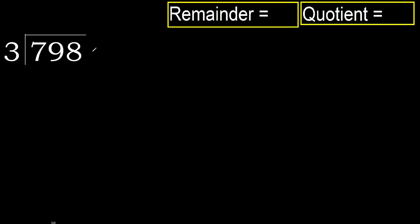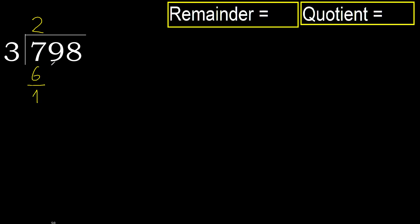798 divided by 3. 7 is not less, therefore with 7: 3 multiplied by which number is nearest to 7 but not greater? 3 multiplied by 3 is 9 — 9 is greater. Multiply by 2: 6 is not greater. Subtract: 7 minus 6 is 1.